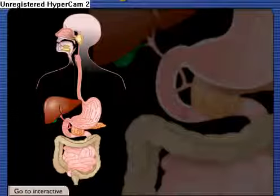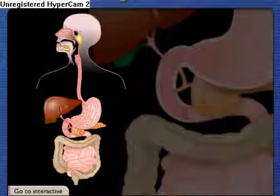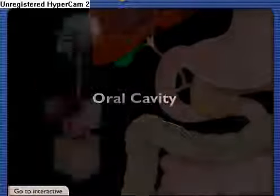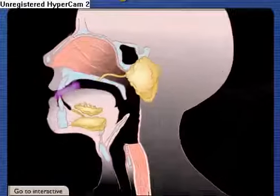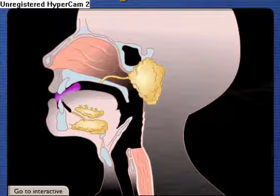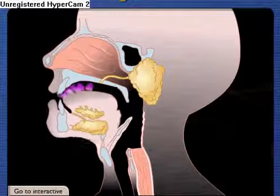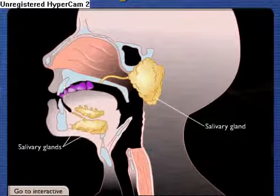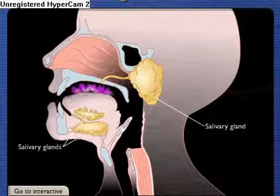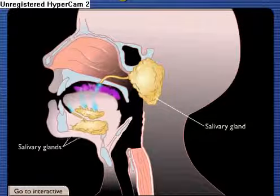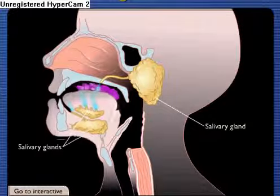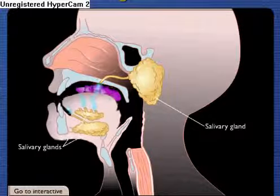The primary functions of the digestive system are the breakdown of food, called digestion, and absorption of nutrients. Digestion begins in the mouth where the teeth break food into smaller particles during mastication. Salivary glands located near the oral cavity secrete saliva, which begins chemical digestion and keeps the food moist.